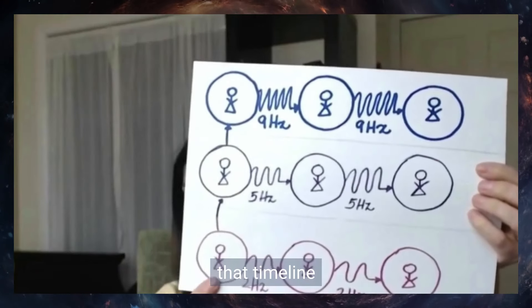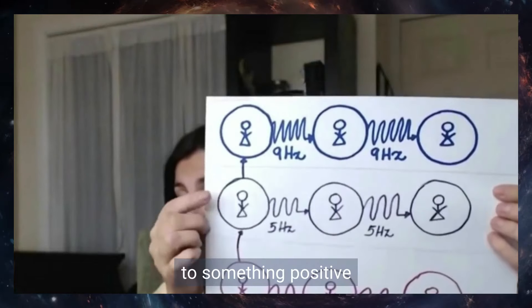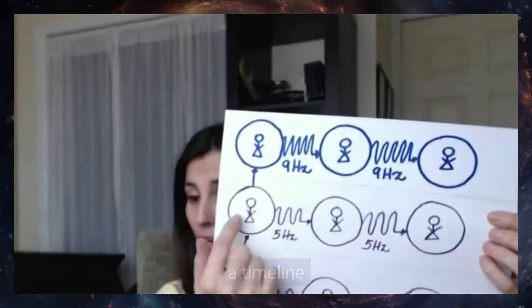If you want to change that timeline, you have to raise your vibration. Now you're shifting to something positive. The outcome will be completely positive. Now you're creating a timeline of outcomes.